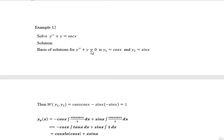First of all, write the homogeneous part of the given ODE: y'' + y = 0. Solving, we can find the solutions as y1 = cos(x) and y2 = sin(x).